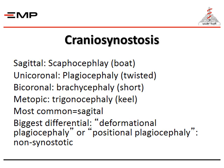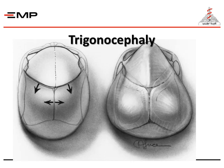Craniosynostosis types include: sagittal synostosis resulting in scaphocephaly (boat-shaped), unicoronal plagiocephaly (twisted shape), bicoronal brachycephaly (short shape), and metopic trigonocephaly (keel-shaped skull). The most common is sagittal, and the biggest differential is deformational or positional plagiocephaly — non-synostotic. A diagram illustrates trigonocephaly.